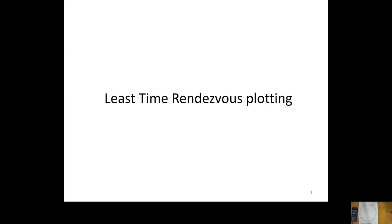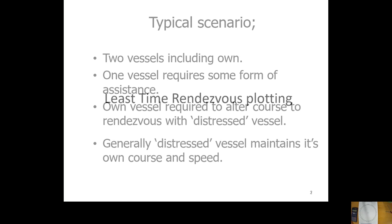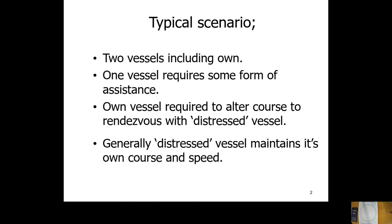What we're going to look at now is how to do a least time rendezvous plot. A least time rendezvous typically involves two vessels agreeing to rendezvous. One of them requires some form of assistance and will generally maintain their course and speed, as they're already heading somewhere that can help them. So one vessel will alter course while the other maintains course and speed.